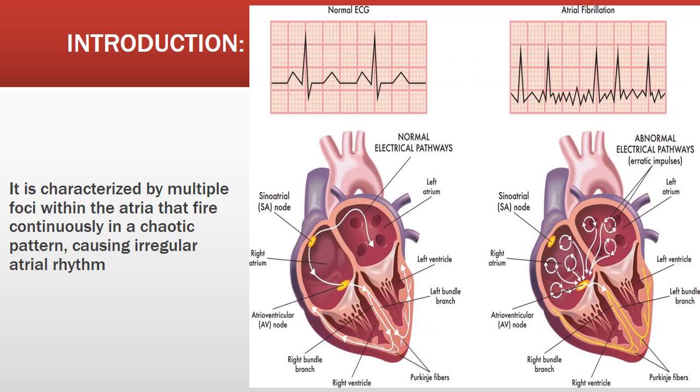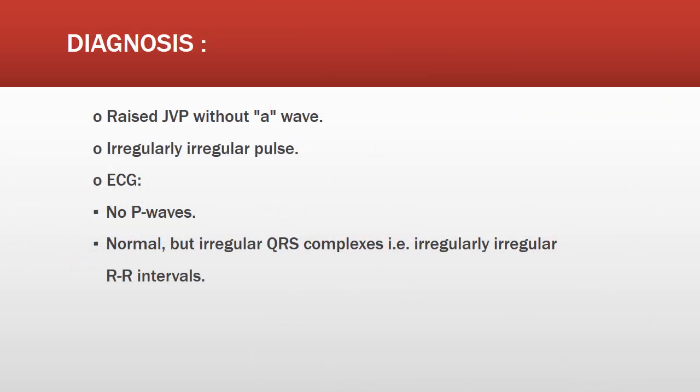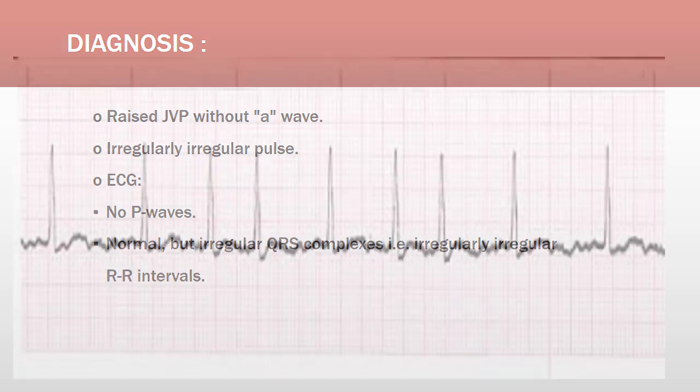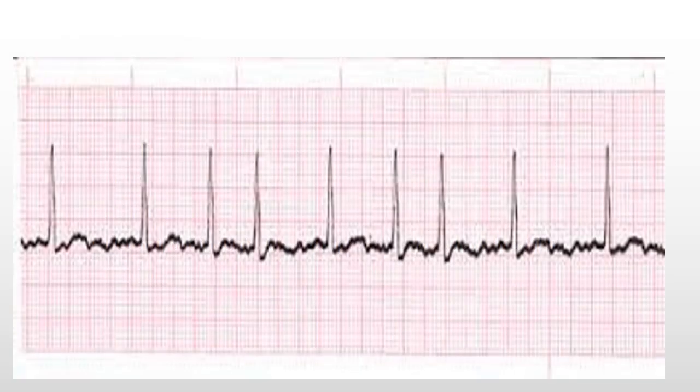The JVP will be raised without an 'a' wave, and there will be an irregularly irregular pulse. On ECG, there will be no P waves, and there will be irregularly irregular RR intervals with irregular QRS complexes. This is a rhythm strip of atrial fibrillation — there is no P wave, and all RR intervals are irregularly irregular, with no fixed space between them.